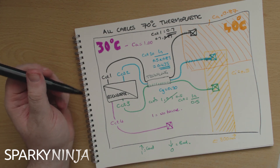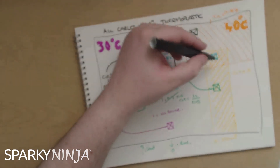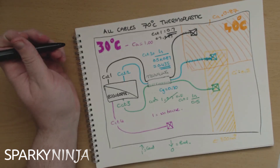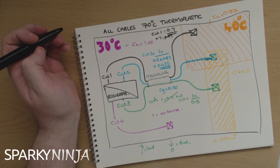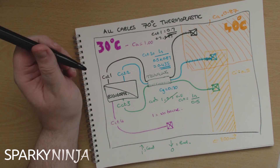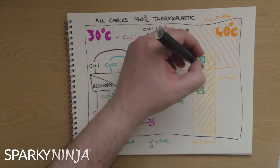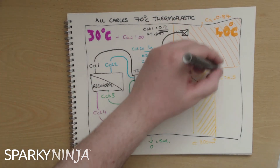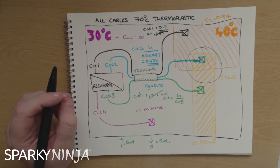Big changes from little different methods of installation. When using correction factors, identify them and only combine them if they coexist — if they happen at the same place at the same time. Otherwise you'll make the cable bigger for no reason.